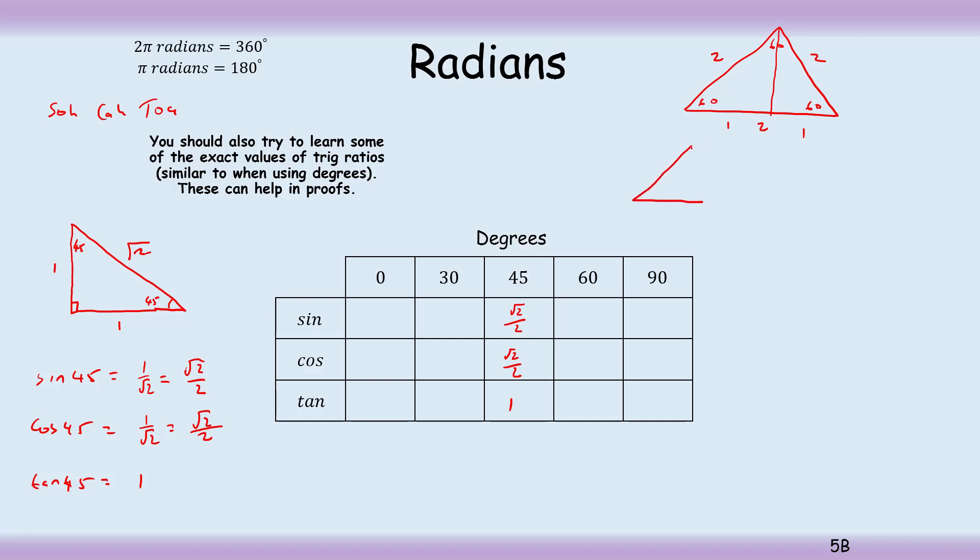So if we redraw that, like so. That's 2, that's 1. That's 60 degrees, that's 30 degrees. And then by Pythagoras, this is going to be the square root of 4 minus 1, so the square root of 3. So we can do the same again. We can do, let's do 60 first.